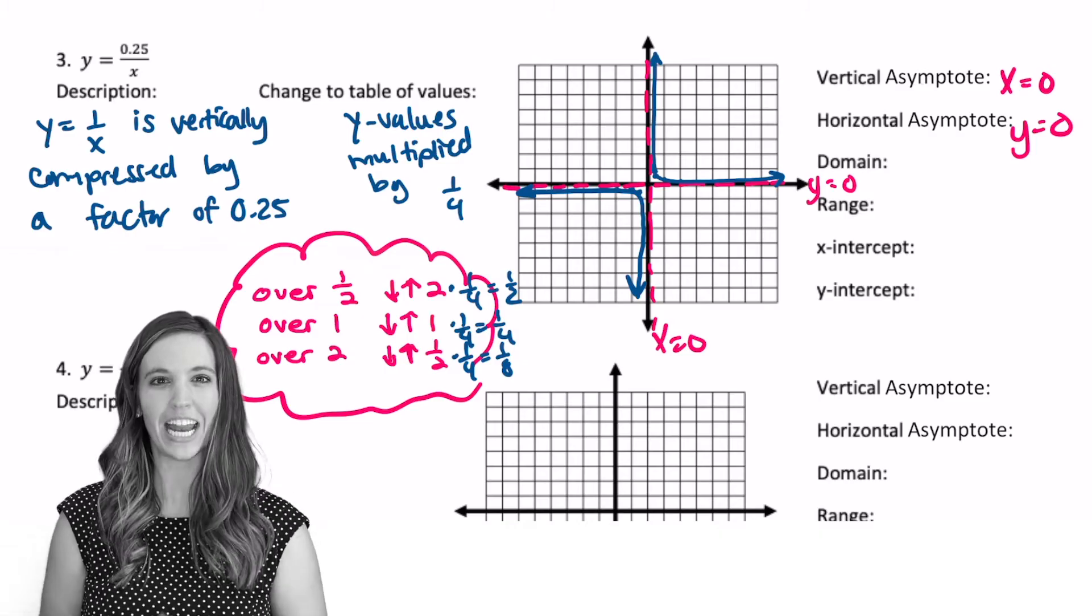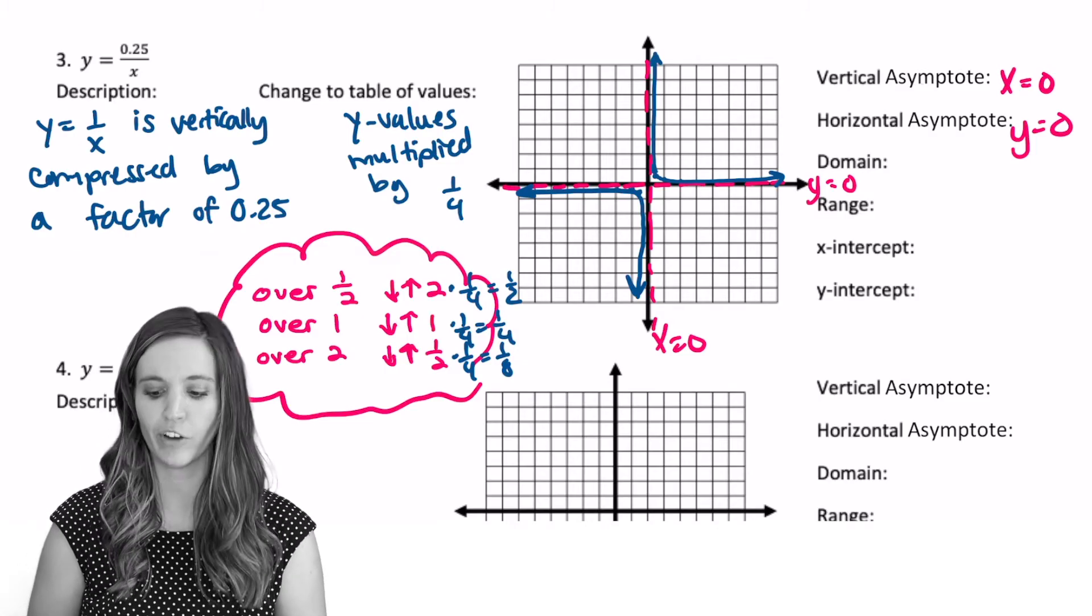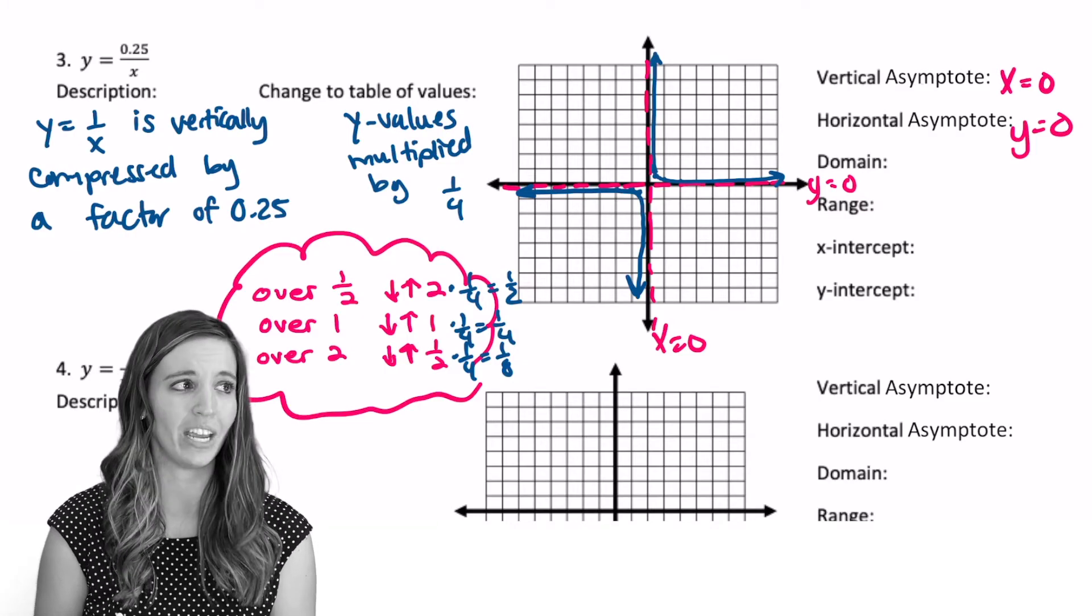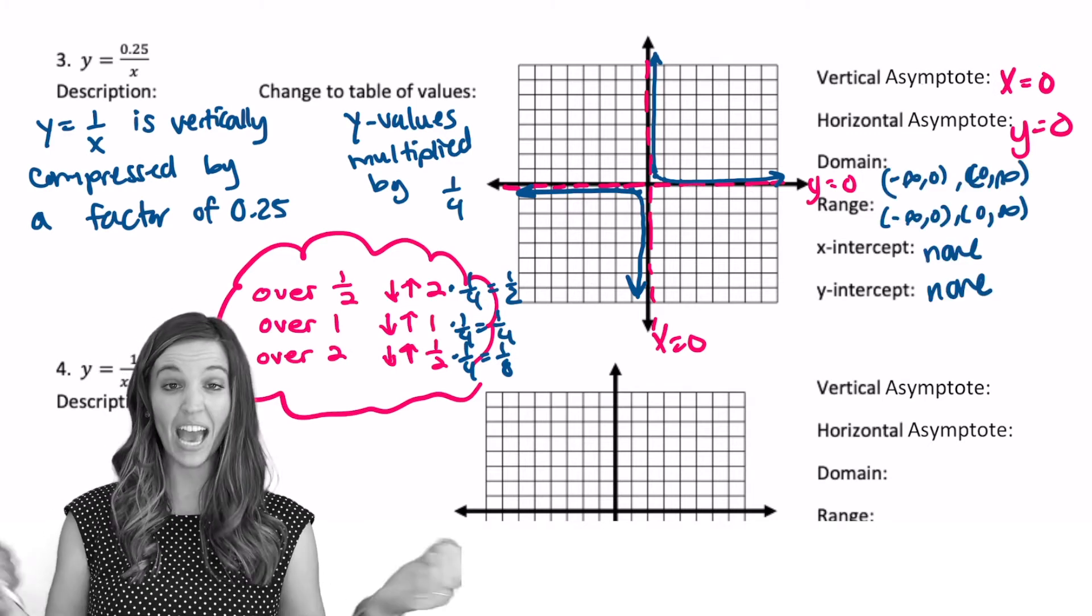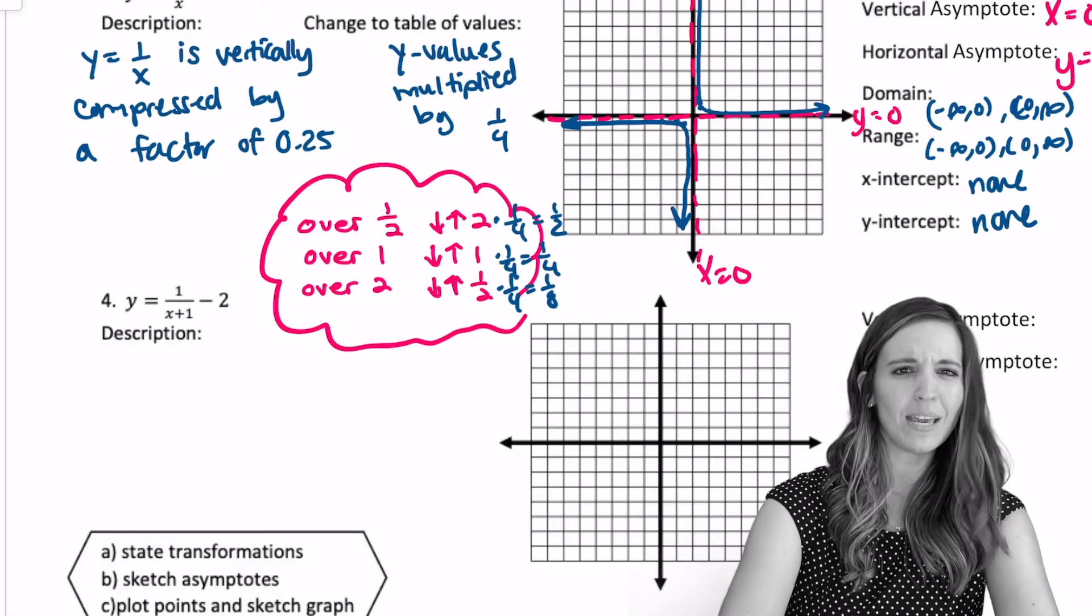Now that I have my graph, did anything else change for my parent function? Is my domain the same? My range? X and Y intercepts? Yeah! All the same. Let's keep this rolling.